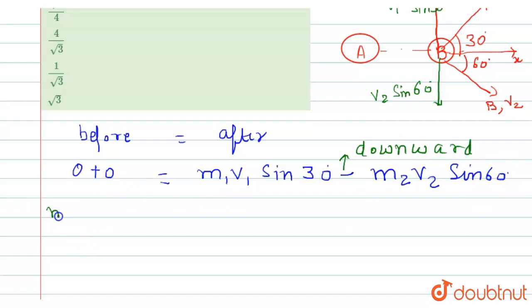Now, M1 V1 sin 30 degrees equals M2 V2 sin 60 degrees.